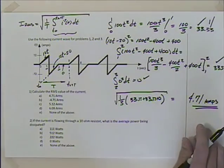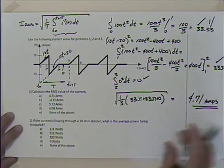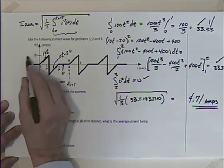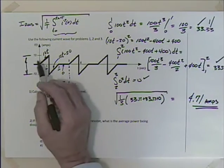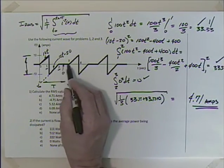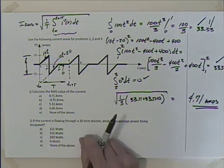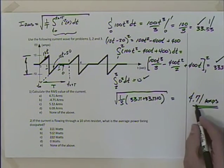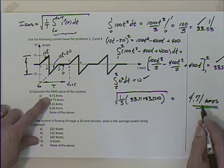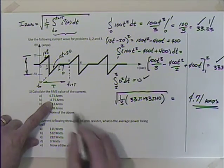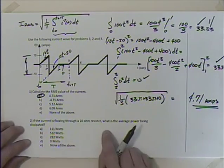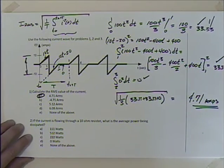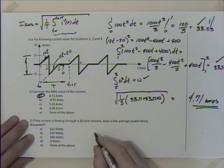Does that check out? We know the RMS must be between 0 and ±10. It's going to be well below 10 because we spend quite a bit of the wave at 0, so 4.71 makes sense. The RMS value is 4.71 amps. Now, if this current flows through a 10-ohm resistor, what's the average power dissipated?